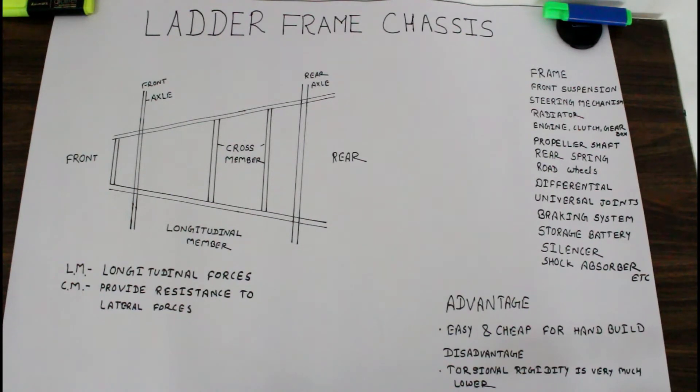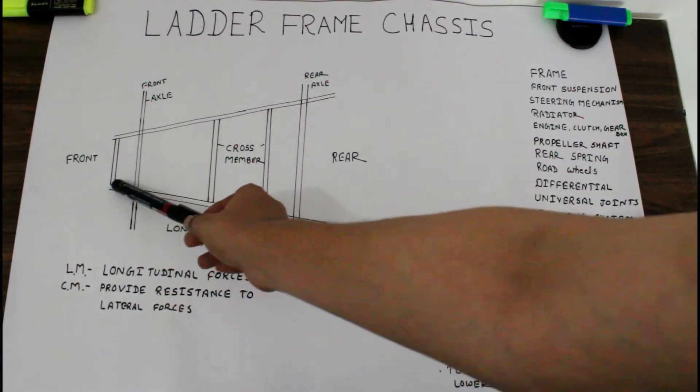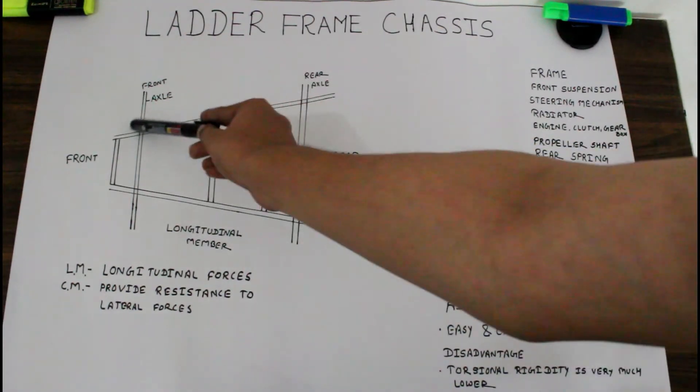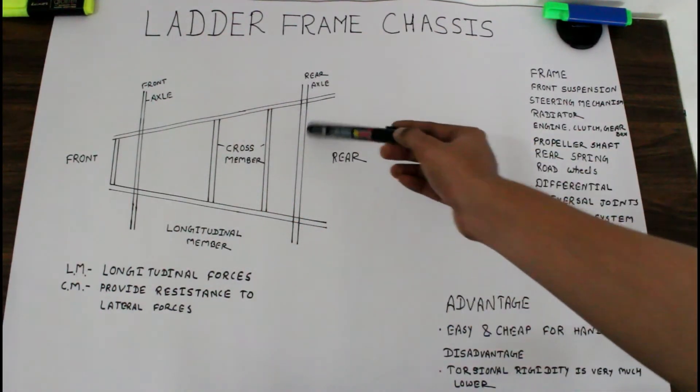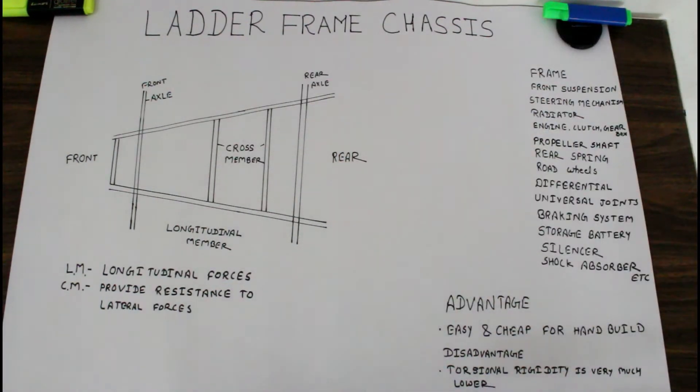The lateral members or cross members provide resistance to lateral forces and further increase torsional rigidity in this frame. This is the front of the chassis and the rear of the chassis with two axles, front axle and rear axle. This is the basic frame of any kind of vehicle.